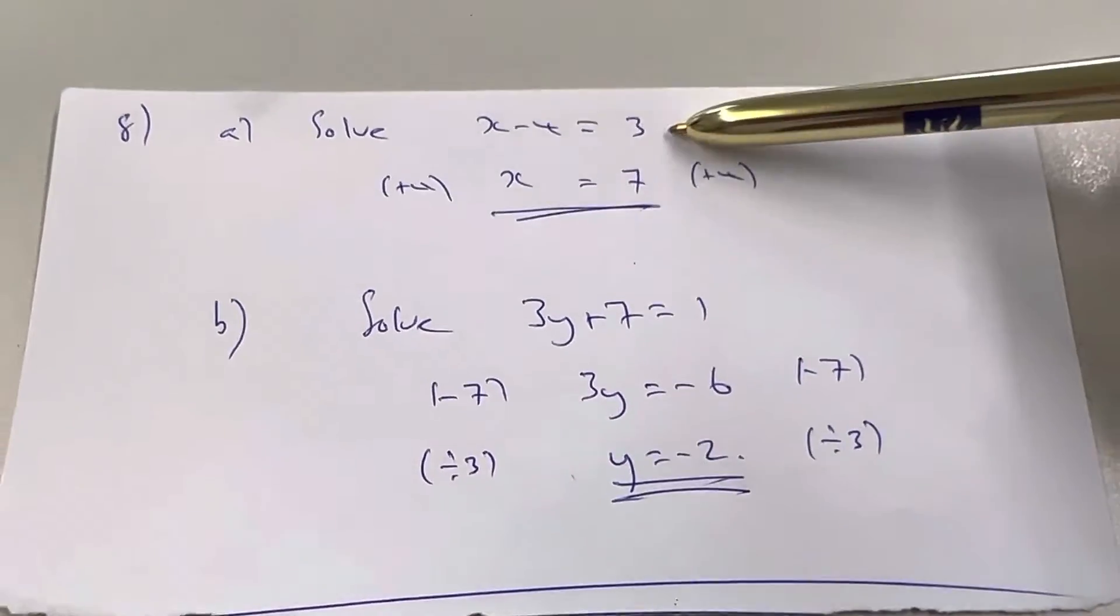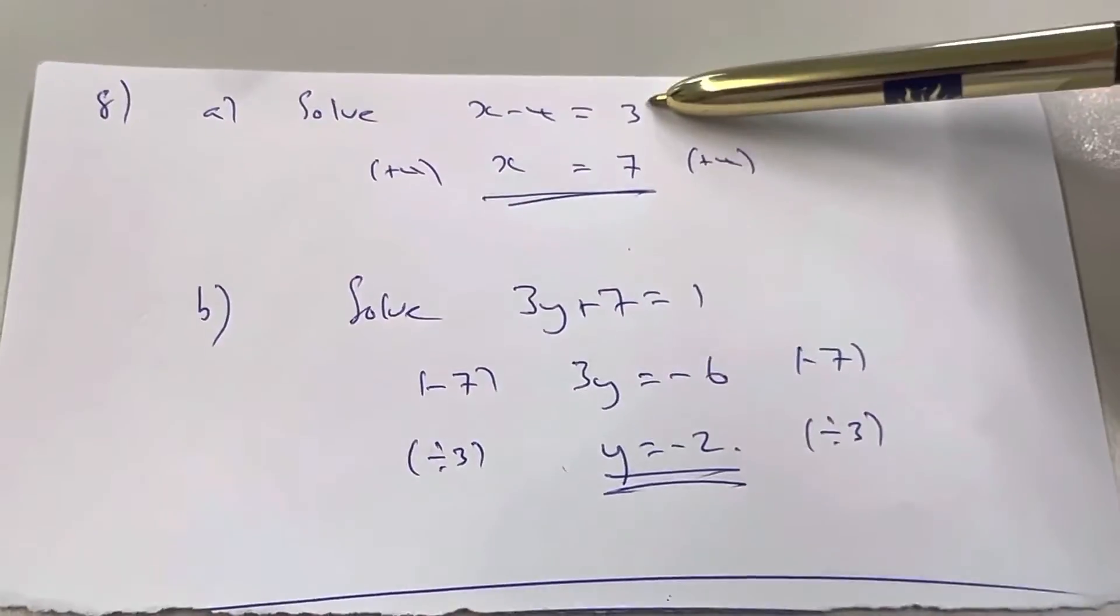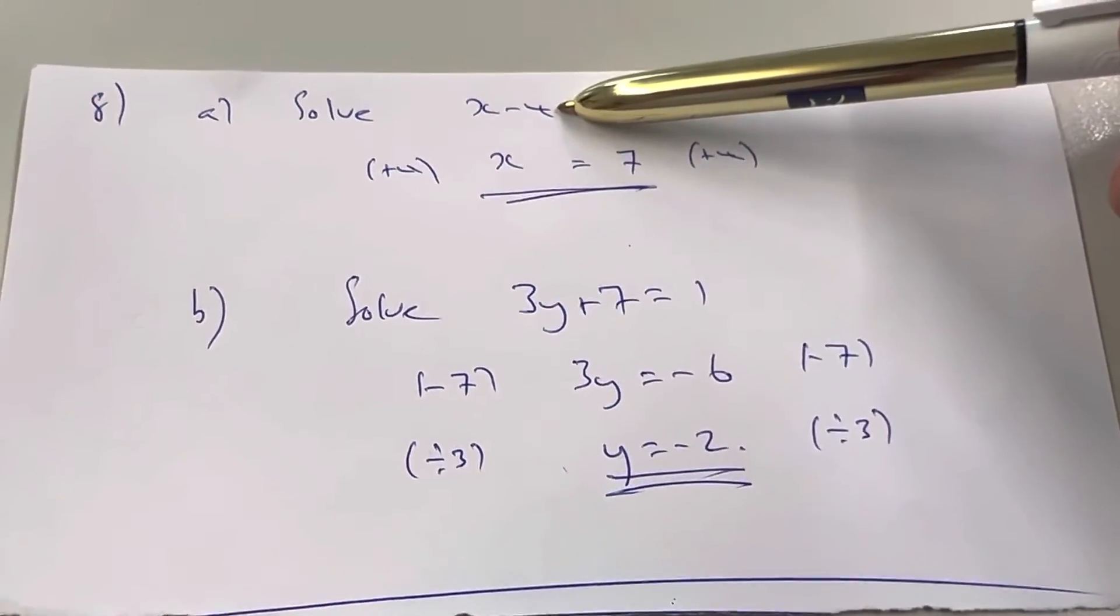OK, finally number 8. Here's an equation. There's only one thing to undo to get the x by itself. We need to undo this minus 4, so I need to add 4.